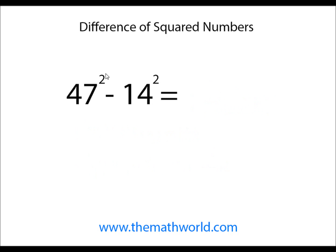Next example we're going to look at is 47 squared minus 14 squared. Keep in mind the larger the difference in the numbers, you may have to do some additional multiplication to actually come up with your answer.